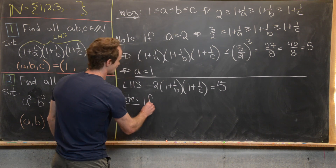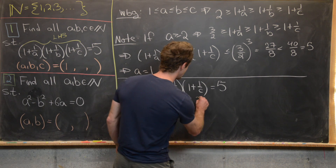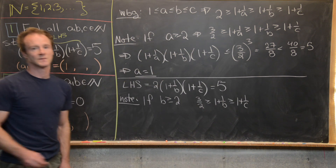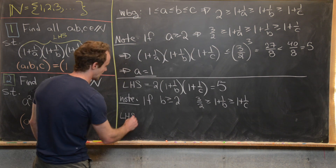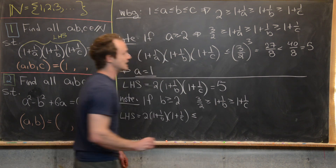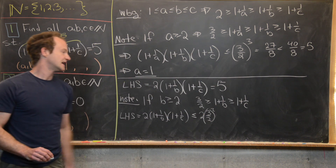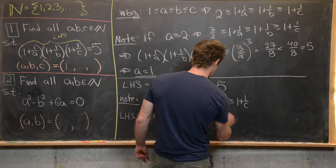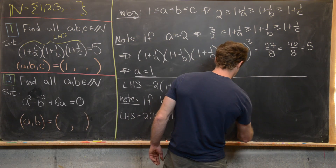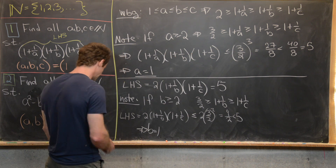If b ≥ 2, then (3/2) ≥ (1 + 1/b) ≥ (1 + 1/c). That makes the left-hand side 2·(1 + 1/b)·(1 + 1/c) ≤ 2·(3/2)² = 2·(9/4) = 9/2. But 9/2 is four and a half, which is strictly less than five. So b cannot be bigger than or equal to two, which tells us that b must equal one.